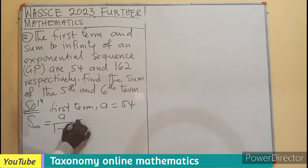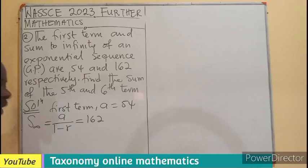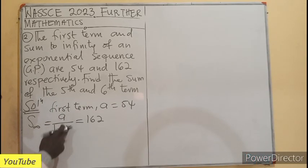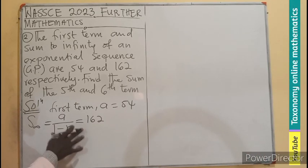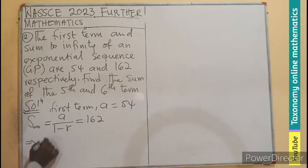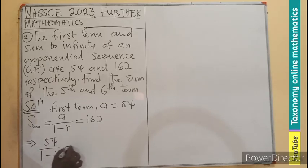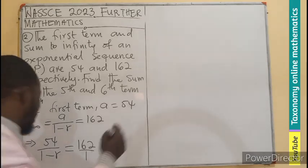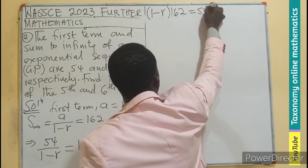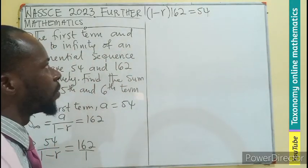Now if we look at this formula, we can see we know what the first term is, but lack the common ratio. So per substitution, with our first term introduced here, that will imply that 54 divided by 1 minus R equals 162. You can see this is a fraction. So let's cross multiply. Meaning 1 minus R will multiply 162 equals 54.